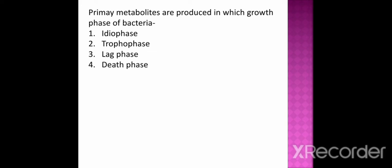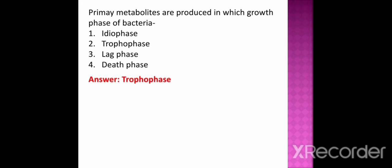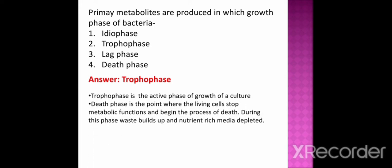The primary metabolites are produced in which growth phase of bacteria? Option 1 idiophase, option 2 trophophase, option 3 lag phase, option 4 death phase. The correct option is trophophase. Trophophase is the active phase of growth of a culture of bacteria, whereas death phase is the point where the living cells stop metabolic function and begin the process of death. During this phase, waste builds up and the nutrient-rich media is depleted.